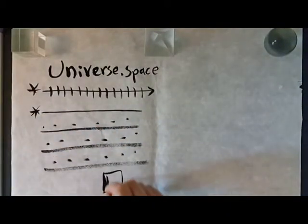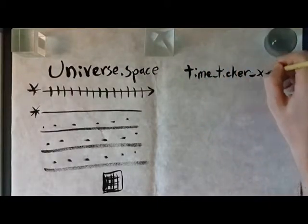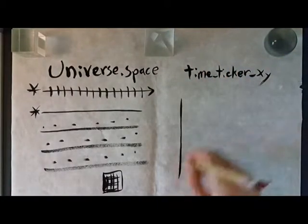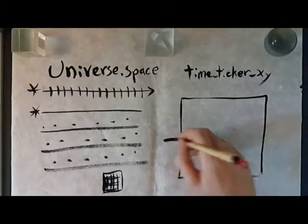This method works fine, but it has some serious drawbacks. Because the time ticker xy only sends you a pointer to all of space and your current xy, you need to calculate out your neighbors yourself.